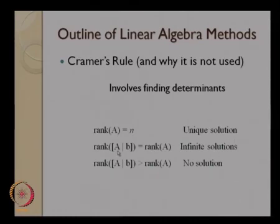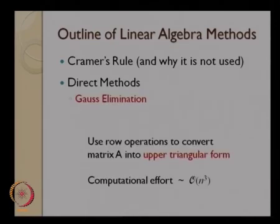If rank of the matrix A is not equal to n, if the rank of matrix A is less than n, then we need to check the rank of matrix AB and the rank of matrix A. If both these ranks are equal, then we have infinite number of solutions. If rank of this guy is greater than rank of A, it is going to be no solution. And then we gave a geometric interpretation of this also in terms of vector spaces.